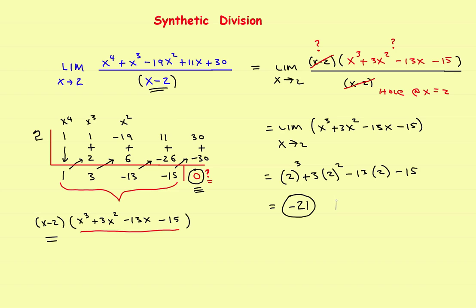So remember: when you've got a longer polynomial divided by x minus two, use synthetic division. If you wind up with a zero remainder, x minus two is a factor and you can cancel it out — then just plug in the value to get the answer. That's the synthetic division example along with the two cubic examples.